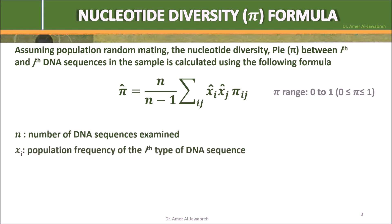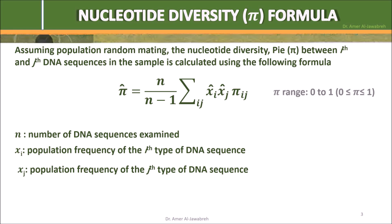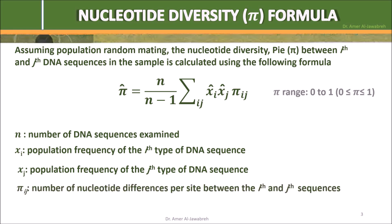Xi is the population frequency of the i-th type of DNA sequence. Xj is the population frequency of the j-th type of DNA sequence. Pi-ij is the number of nucleotide differences per site between the i-th and the j-th sequences. The hat sign indicates estimation.